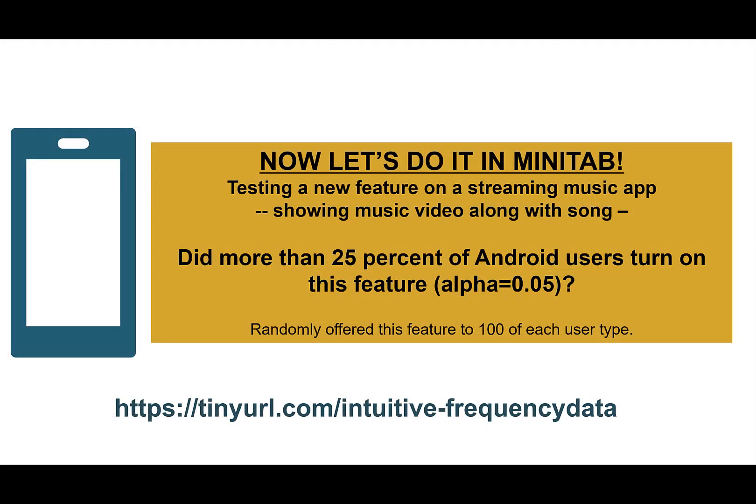All right. So we just ran the two-sample proportions test in Minitab. Now we're going to show you how to do a one-sample one. You could imagine the question being this: Did more than 25% of Android users turn on this feature?